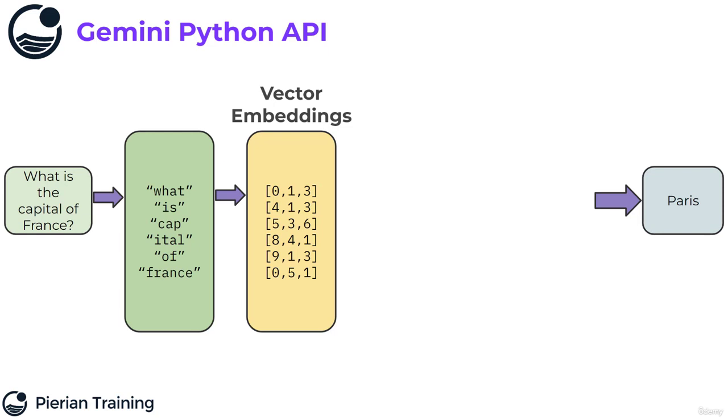The creation of these vector embeddings is part of the training process. So once we have a trained model, we can directly go from words to tokens to embeddings. Understanding this part is important because later on, we're just going to use this half of the model, so to speak, to perform what is known as RAG, retrieval augmented generation.